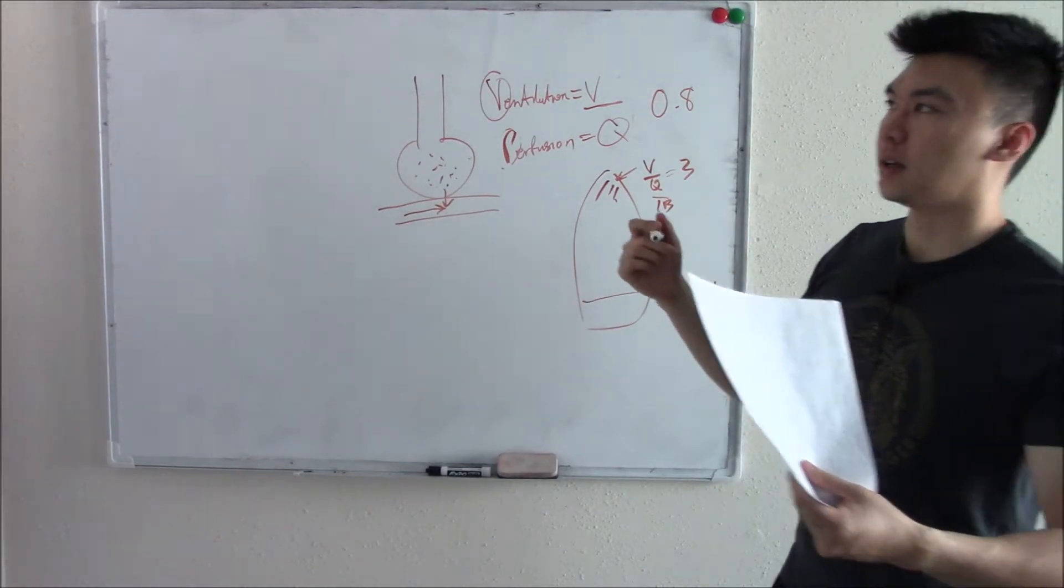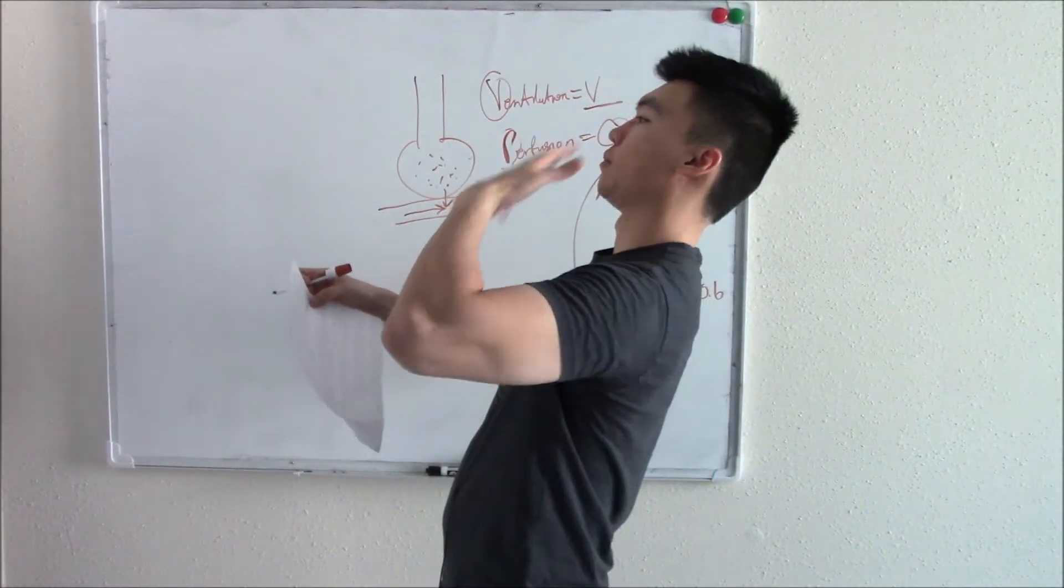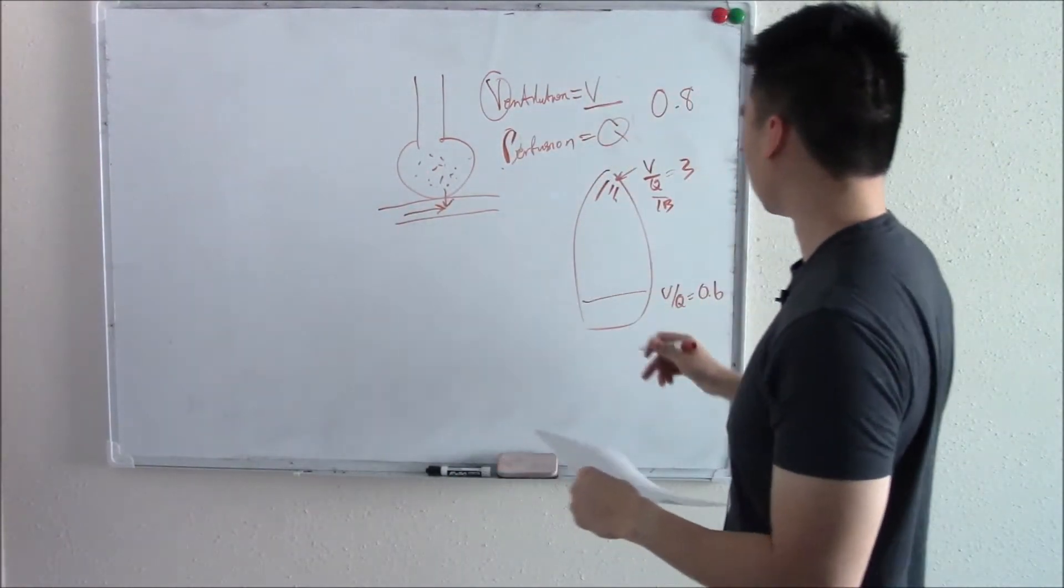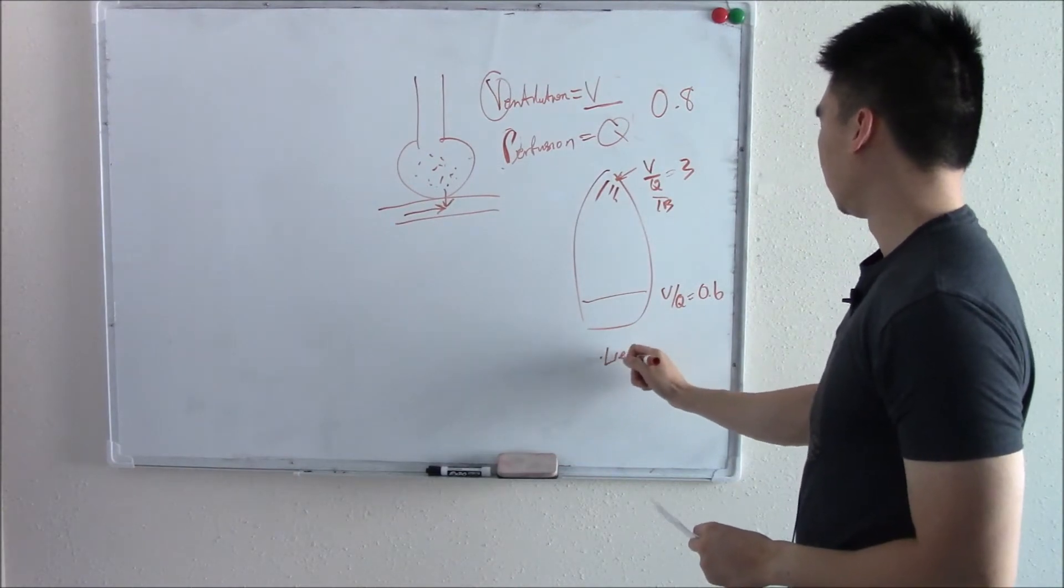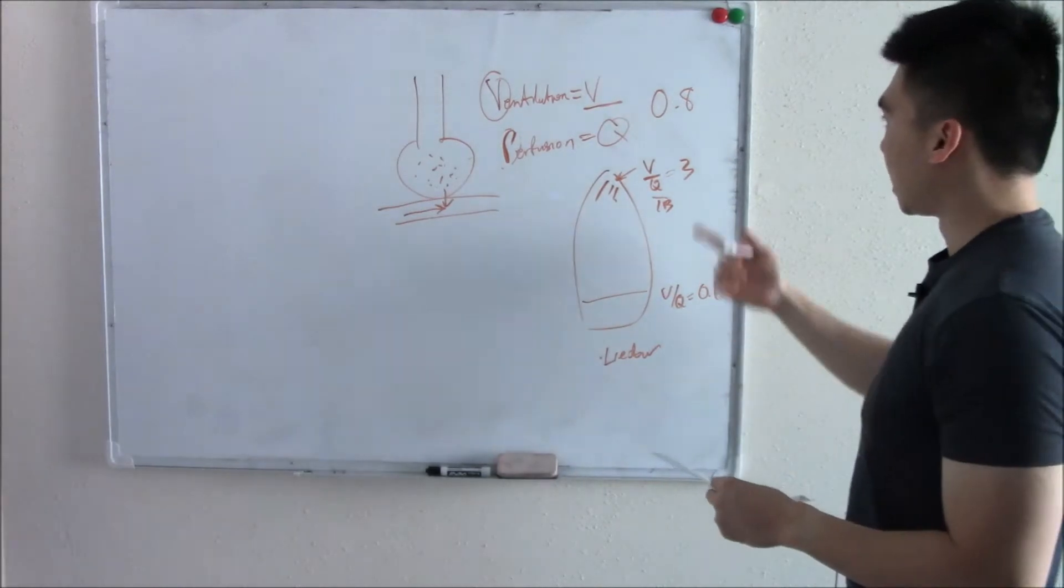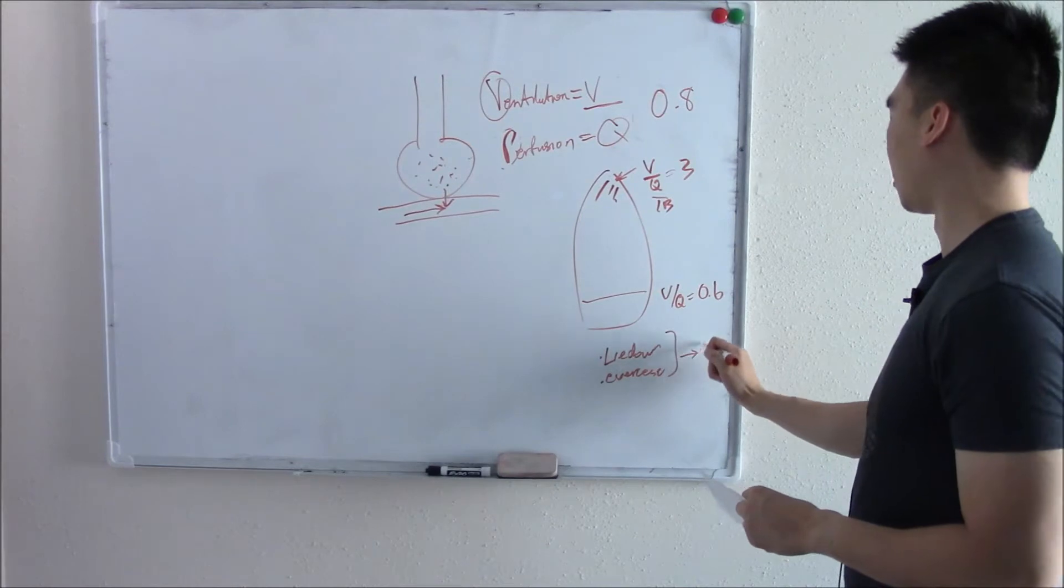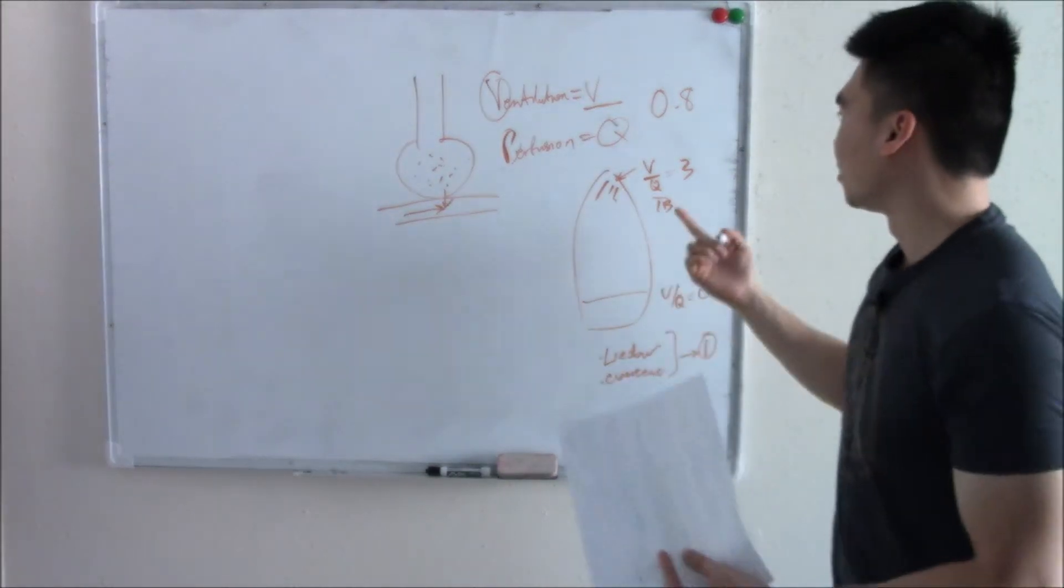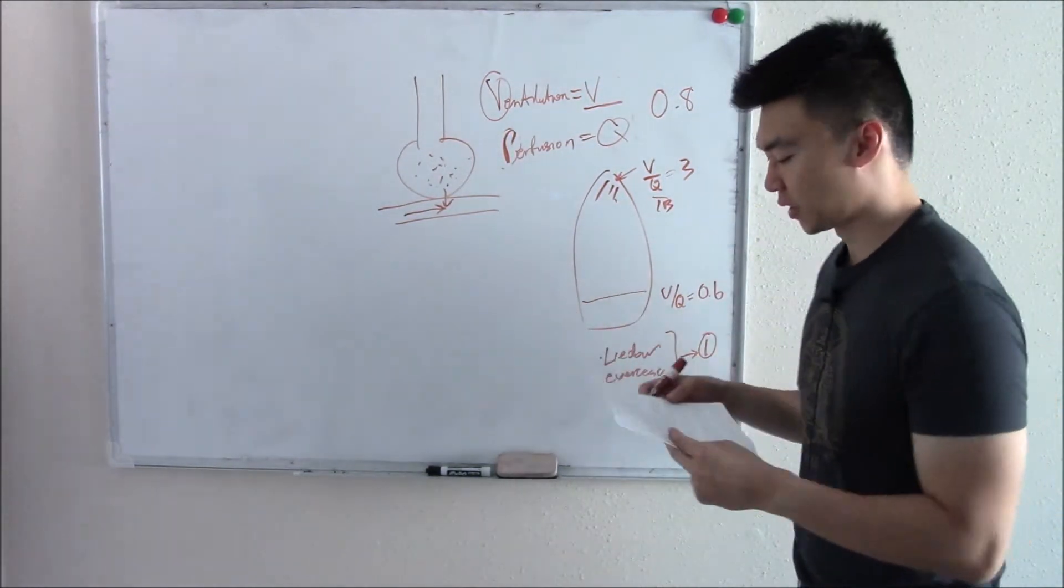We can get it closer to one. For example, if you lie down and you reduce that gravity effect in your blood and blood just kind of bathes your whole lungs, you kind of even that out and you get closer to one. Or if you exercise, you cause vasodilation, increased perfusion, and that gets us closer to one. It's just closer to our magical number of one, but we never really get there. In normal resting circumstances, 0.8 is good enough.